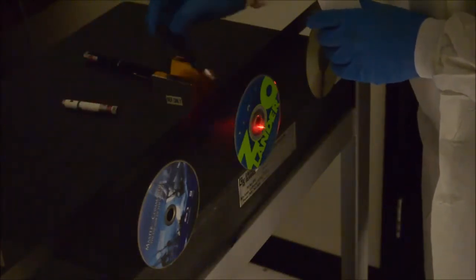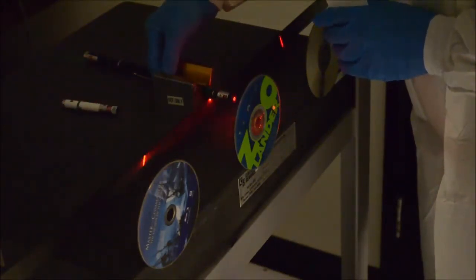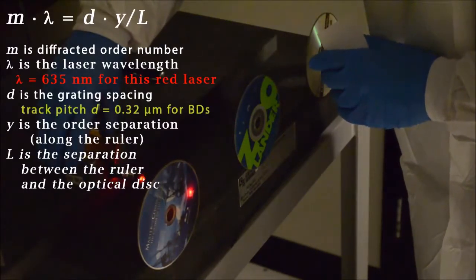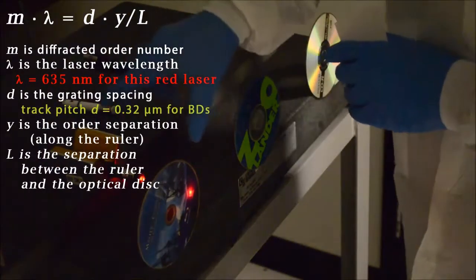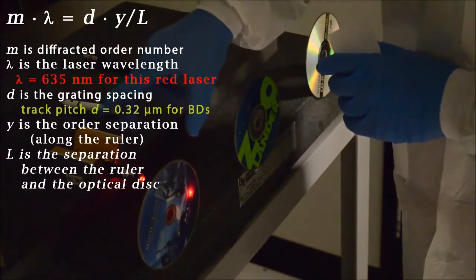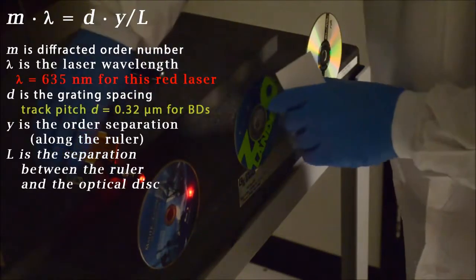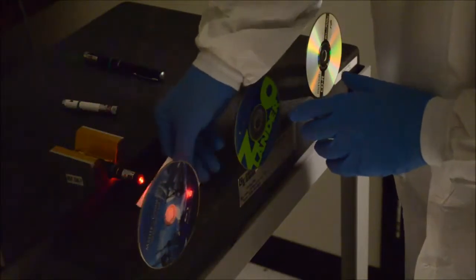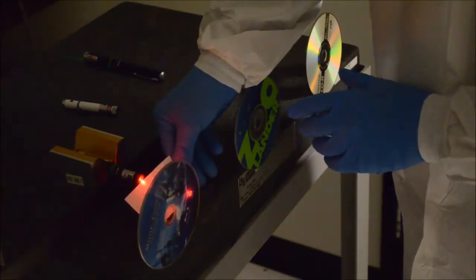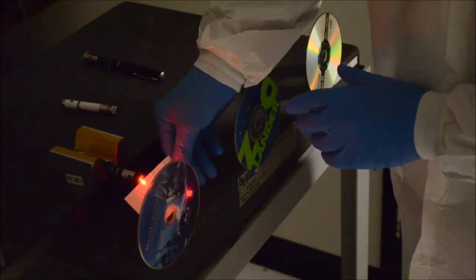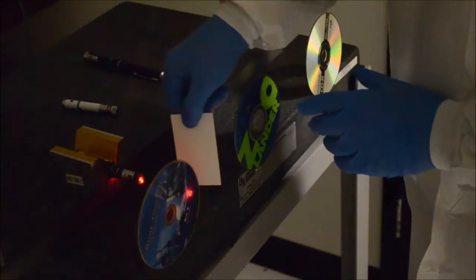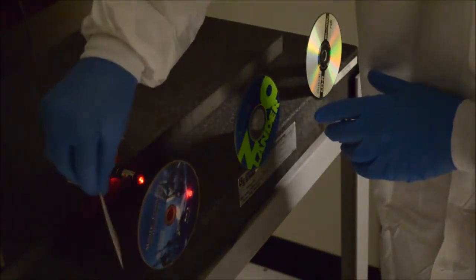An interesting thing happens when we go to the Blu-ray disc. If we put the red laser on the Blu-ray disc... Again, every time you move this, you'll have to measure the distance between the screen, which is your ruler in this case, and the optical media itself. With the Blu-ray disc, you can see the zeroth order is lined up. This is the return beam reflecting off the Blu-ray disk surface, but we see no diffracted orders on either side.